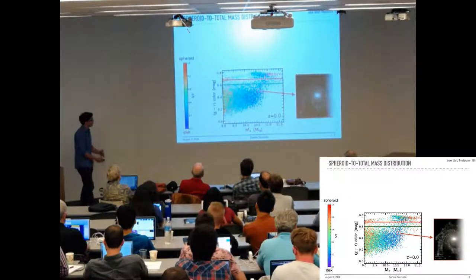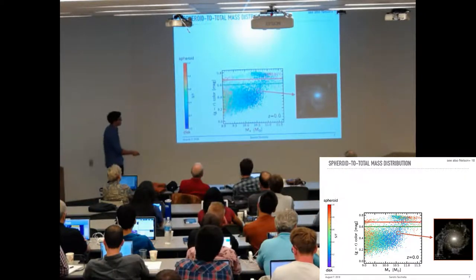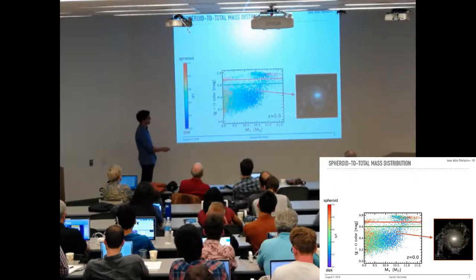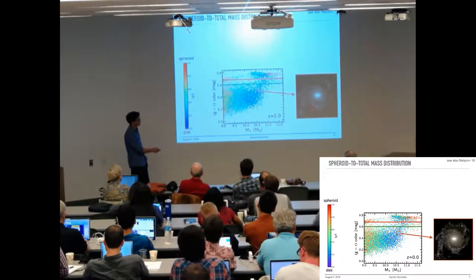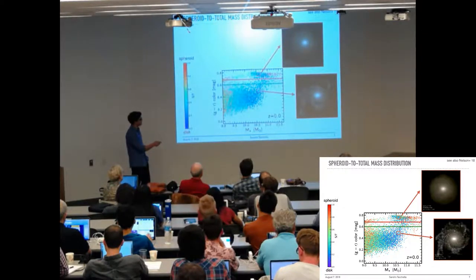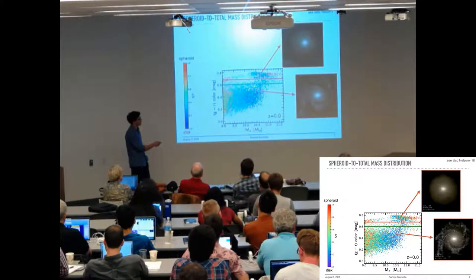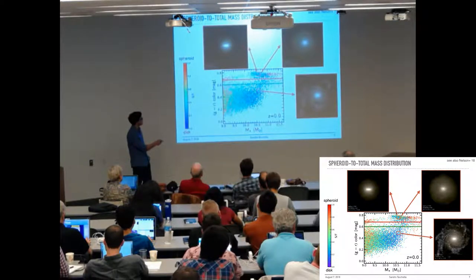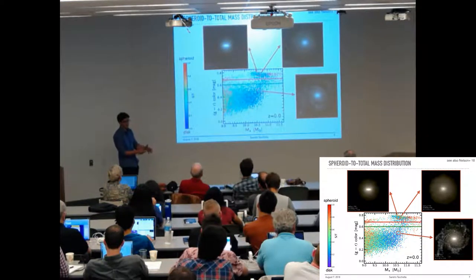We can also look at how these galaxies really look in the simulation. I show a few images at the same mass — a 10^10.6 solar mass galaxy. A star-forming one shows nice spiral patterns. Going to a redder, quiescent object, you can clearly see a dominant spheroidal component. But at the same color and mass, you can also find galaxies that are more disk-like.